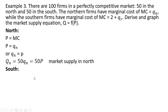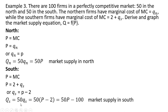Now for the south, same method: price equals marginal cost, solving for Q, we have the individual firm supply in the south. Since there are 50 firms just like this one, the market supply will be 50 times lowercase q subscript s, giving us the market supply in the south of 50p minus 100.